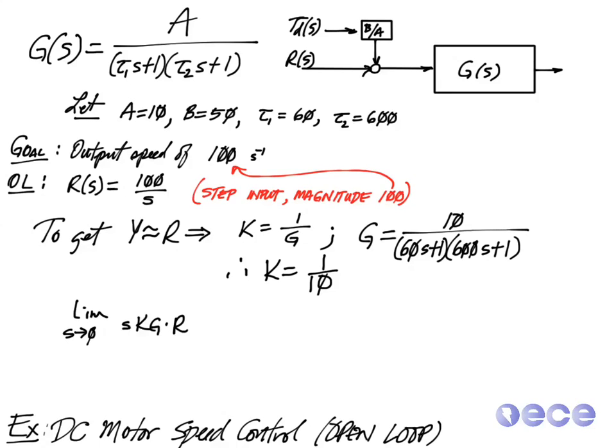So as I add these values to the equation, I'm taking the limit as S approaches 0 of S times 1 over 10, so 1 over 10 is the gain K that I'm choosing. And then my plant G, which is 10 over these two values.